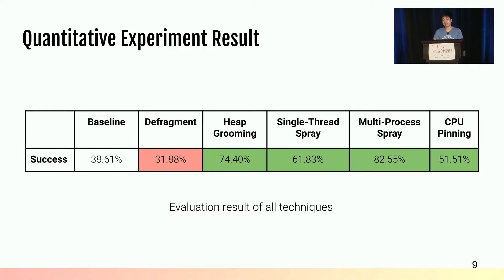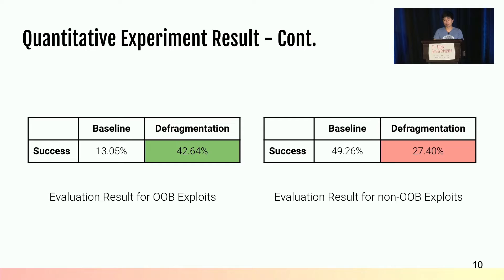The result of the quantitative experiment is summarized here. Overall, multi-process heap spray improves exploit reliability the most significantly. While all other techniques improve exploit reliability as expected, defragmentation as a stabilization technique somehow hurts reliability. We investigated further and found that defragmentation only improves exploit reliability for out-of-bounds access exploits — and interestingly, if used incorrectly, it can significantly hurt reliability for other exploits.